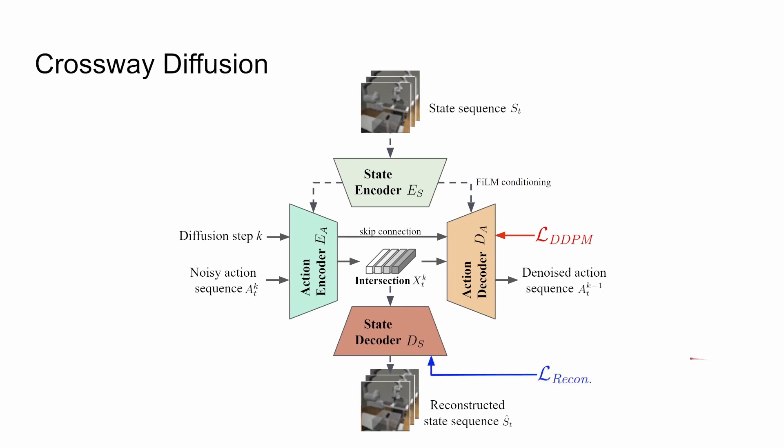During training, the state decoder reconstructs raw image pixels and other state information from the intermediate representations of the reverse diffusion process. The reconstruction loss is jointly optimized with the diffusion loss.